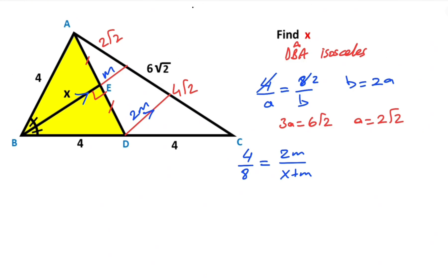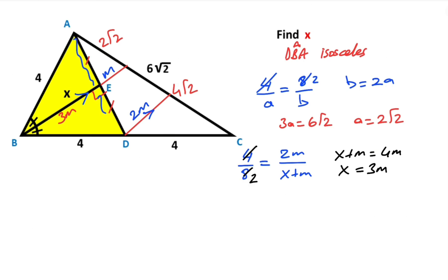If you simplify the expression, therefore X plus M equals 2M, which means X equals M. Wait — X plus M equal 2M means X equals M. Let's write here: X equals 3M.